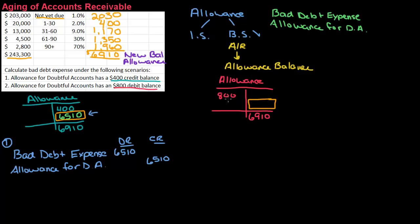So what we're going to do is we're actually going to add these two numbers together. So here we subtracted, right? We took $6,910 minus the balance that was already in the account. Here we're going to add them together. So if I add them together, that would be $7,710. So this would be enough to cover the $800 overdrawn plus the $6,910 that I need. So this is the amount of my journal entry.